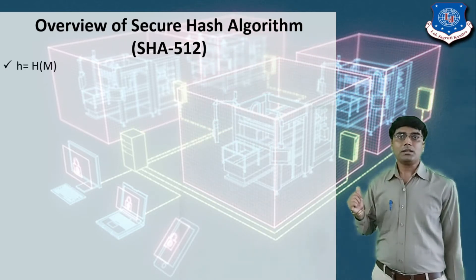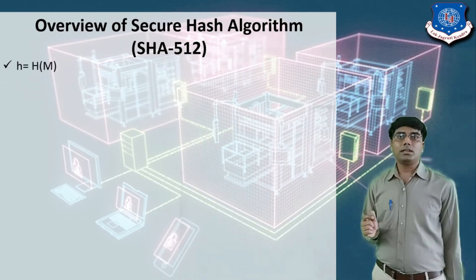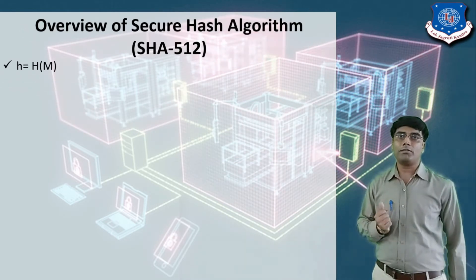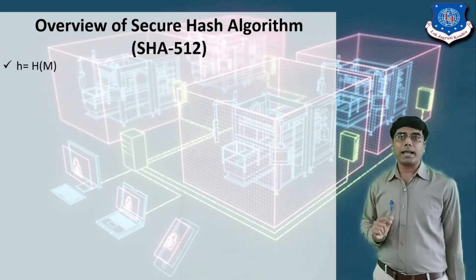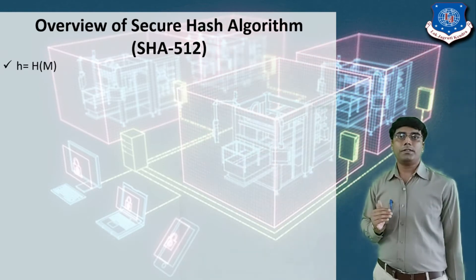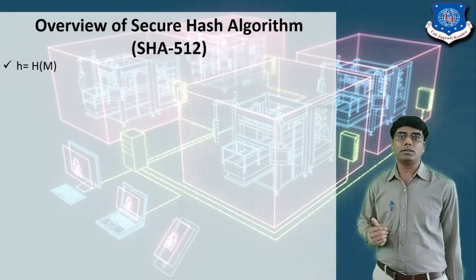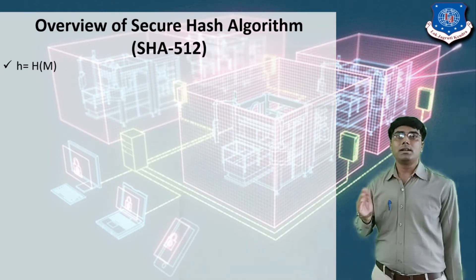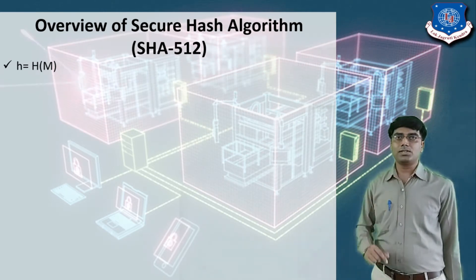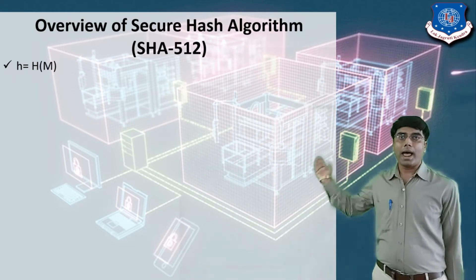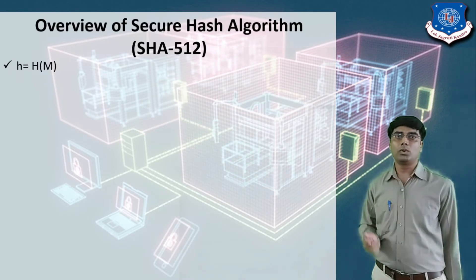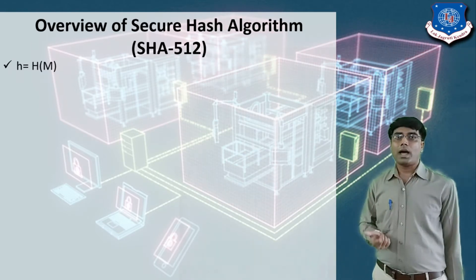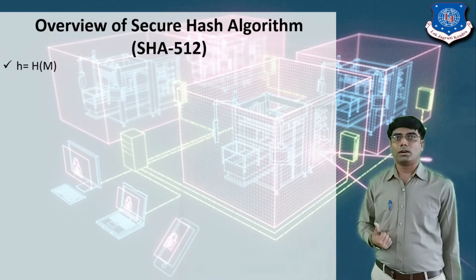The formula is h = H(M), where the small h represents the fixed length value, M represents the message, and capital H represents the hash function. We apply the hash function on the plain text message, and after applying it, it generates a hash value. This hash value is also called the fixed length code, message digest, or hash code.